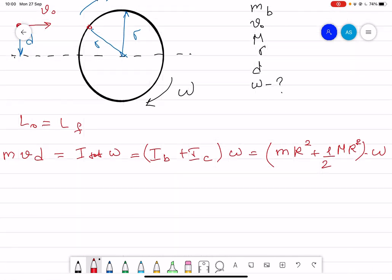So from here, you have to find omega. Omega is equal to m v D divided by m R squared plus 1 over 2 mass of the cylinder radius squared. So that's it.